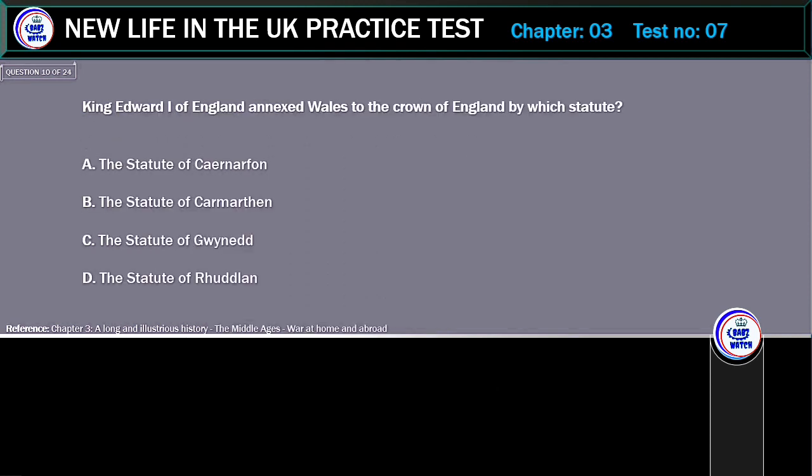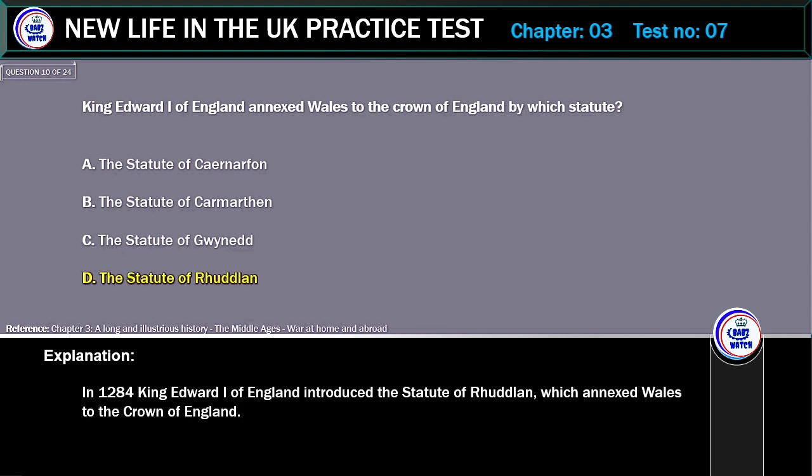King Edward I of England annexed Wales to the Crown of England by which statute? A. The Statute of Carnarvon. B. The Statute of Carnarvon. C. The Statute of Gwynedd. D. The Statute of Rithlin. Correct answer: The Statute of Rithlin.